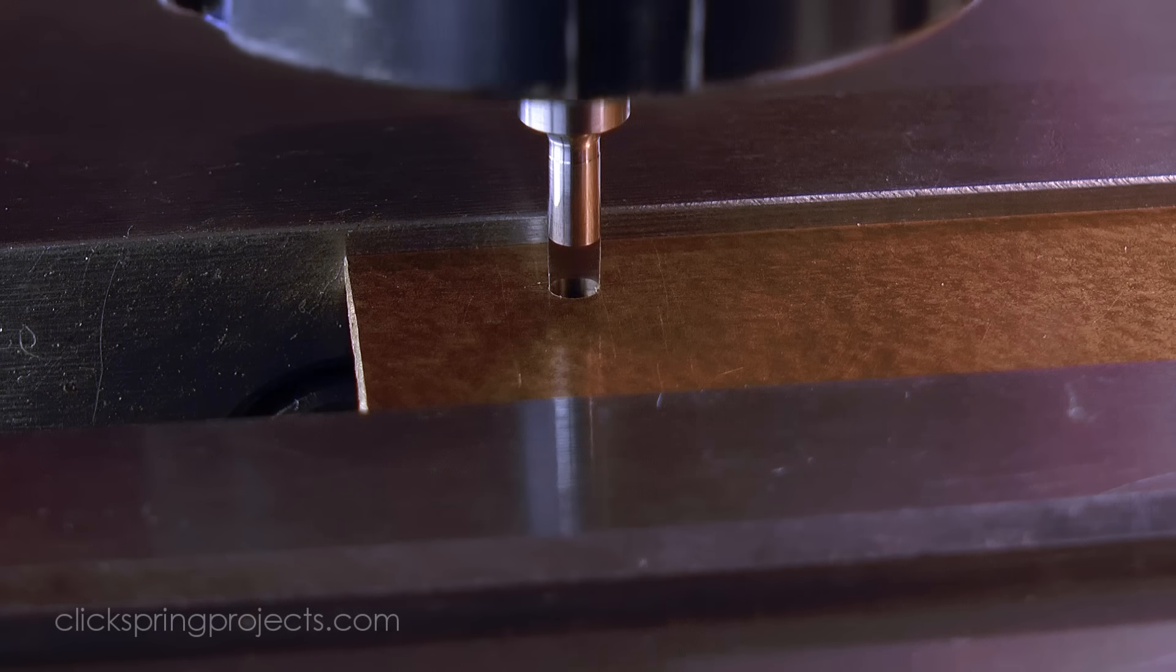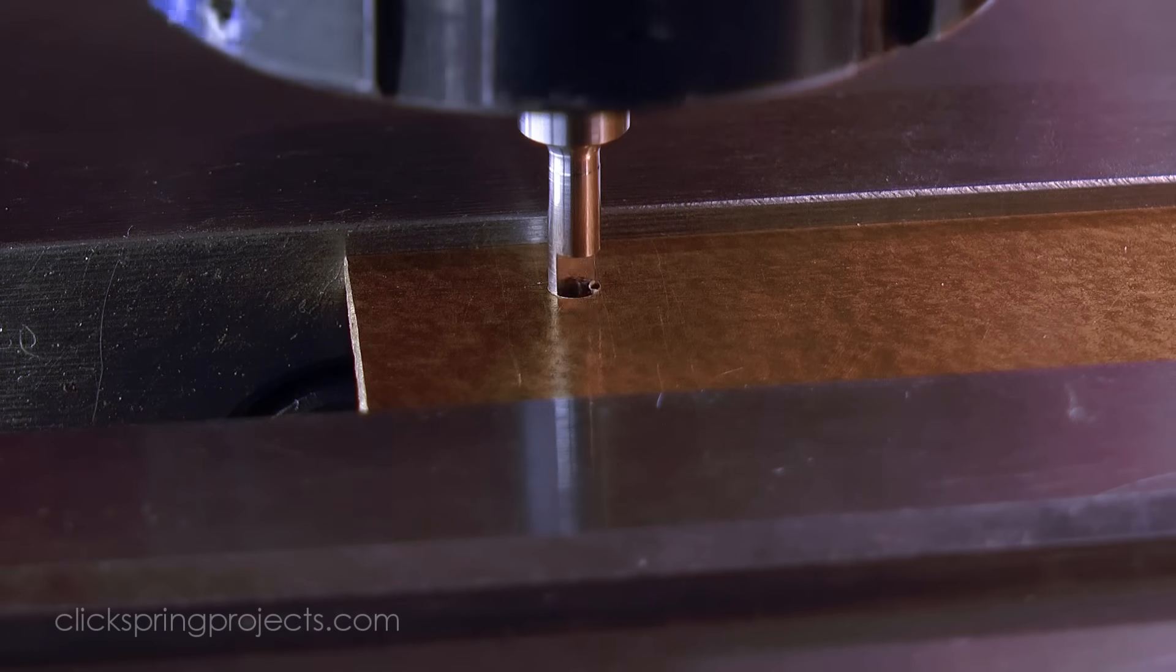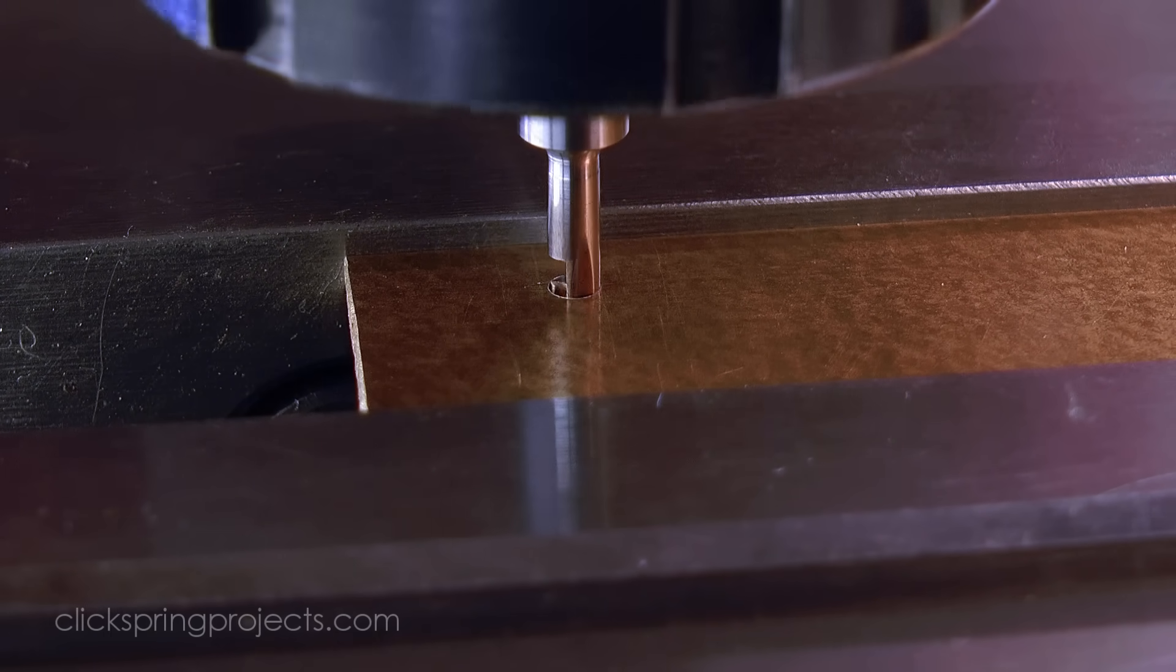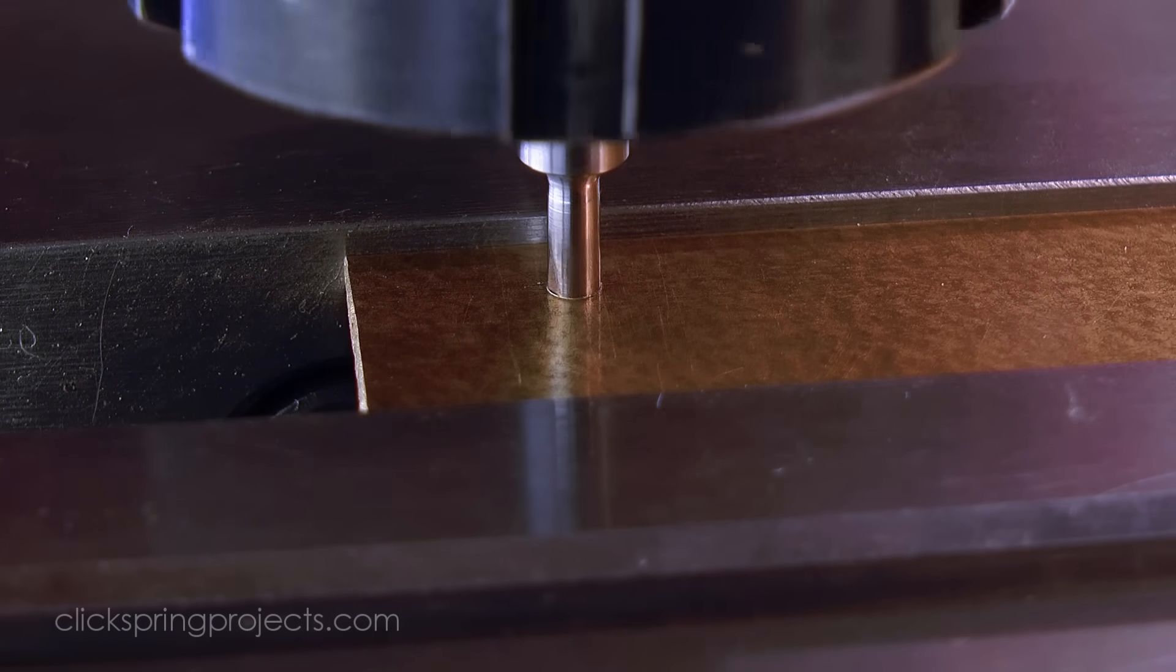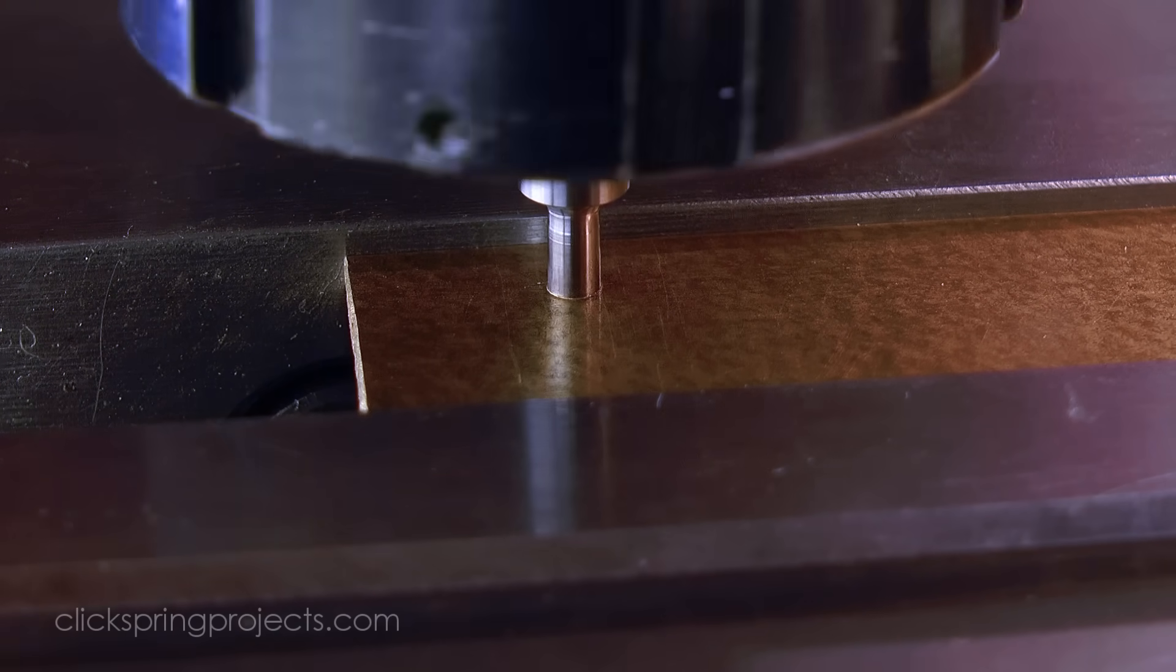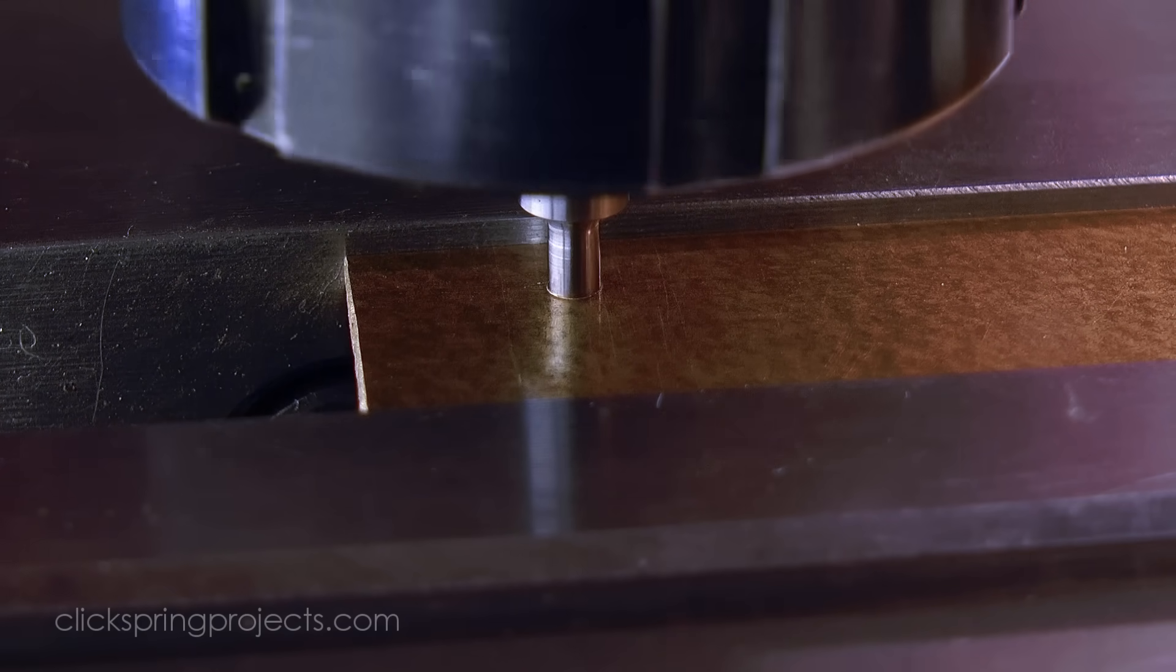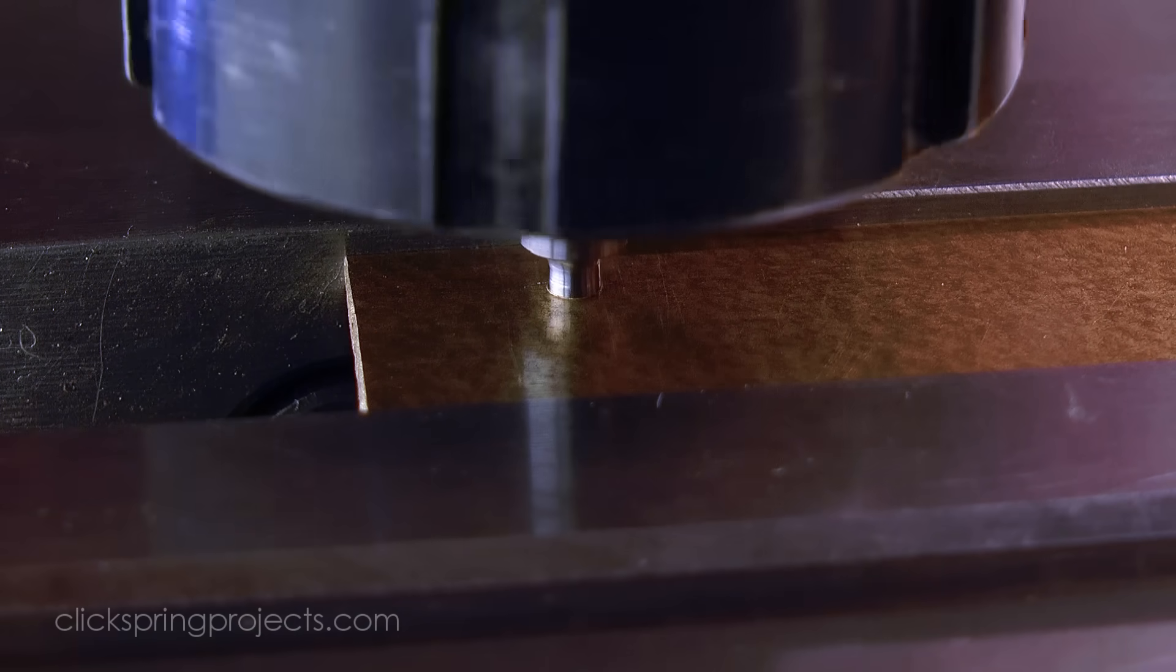You can just see a clean chip curling off as the tool descends into the hole. The hole is then burnished smooth by the cylindrical section of the tool as it continues to descend, ultimately leaving a hole precisely sized to receive the jewel.